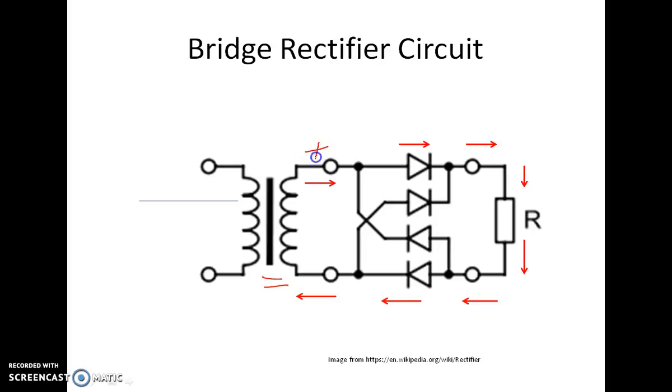In positive half cycle the polarity which is generated across the secondary is plus minus giving this diode to be forward biased as well as this diode to be forward biased and the current flowing through the load is in this direction.